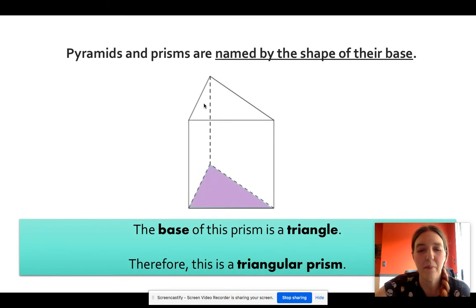Here we see a prism because it has a flat top. This has two triangle bases, one on the bottom that's flashing in purple and one up top above it, making that flat top. And so we call this a triangular prism. Note that the other sides are all rectangles.